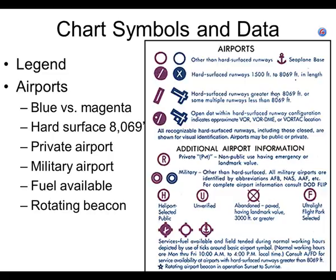Look at San Francisco International and go about an inch and a half north — you'll see a round circle with an X in it. Can anybody guess what that means? It's a closed or bad airport. If you flew over it, the X is painted on the runway. They put it there so if you were navigating by looking out the window — that's called pilotage.